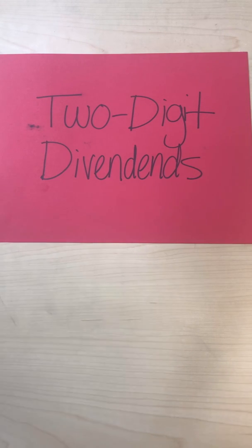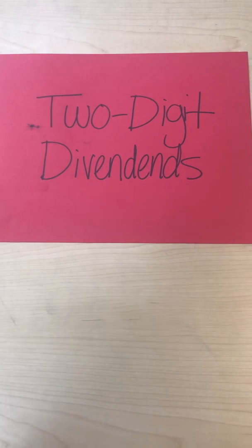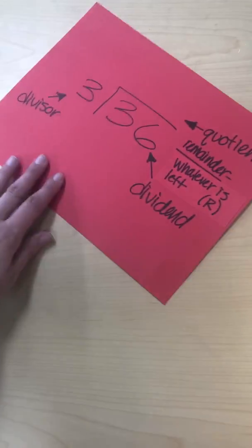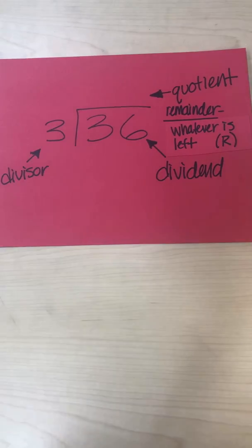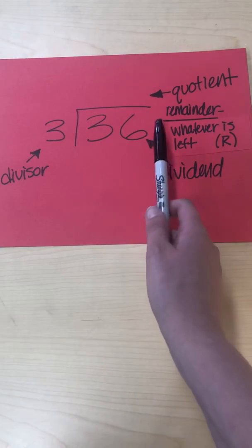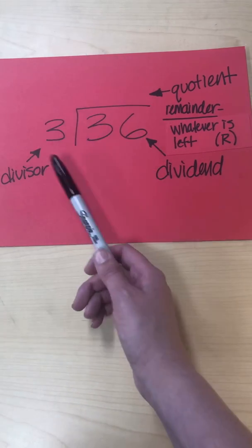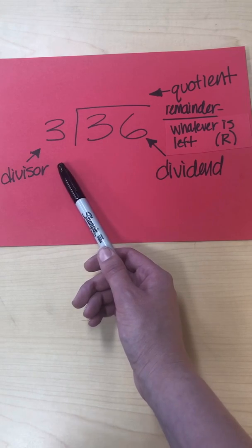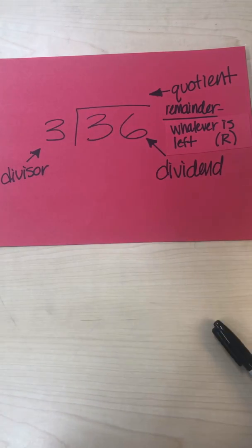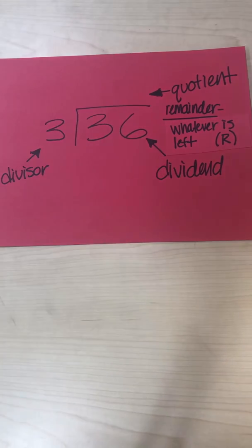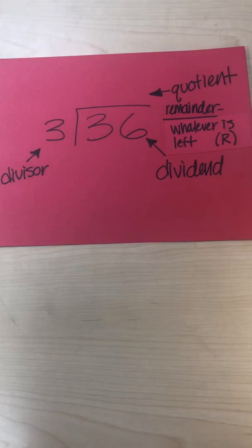For today's lesson we are going to be dividing with two-digit dividends. Let's first talk about what a dividend even is, and here are some important words you may also hear in the lesson. A dividend is the number you're dividing — the number on the inside. The number on the outside is called the divisor, and our answer is called a quotient.